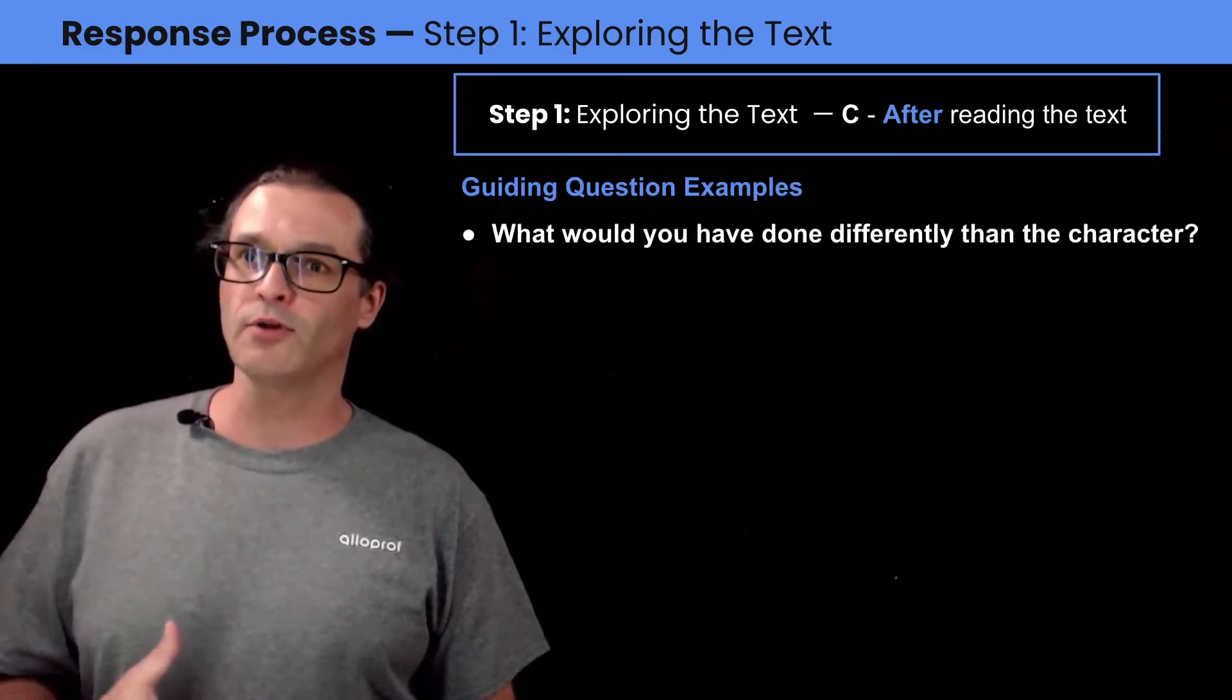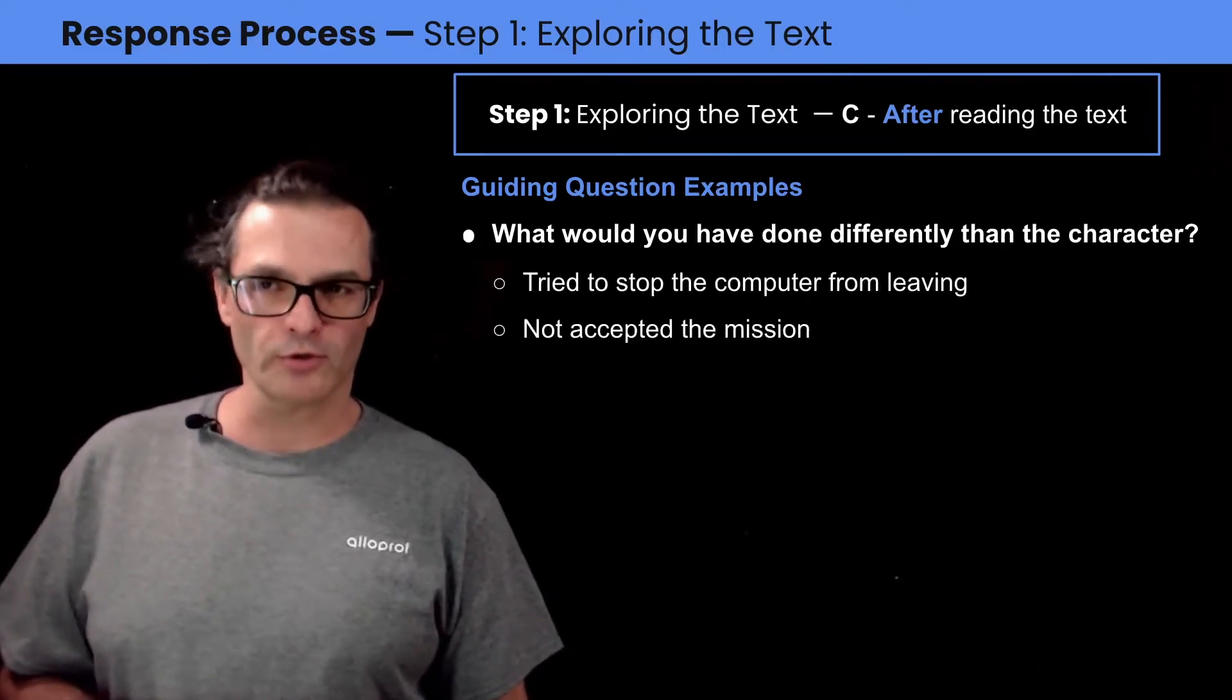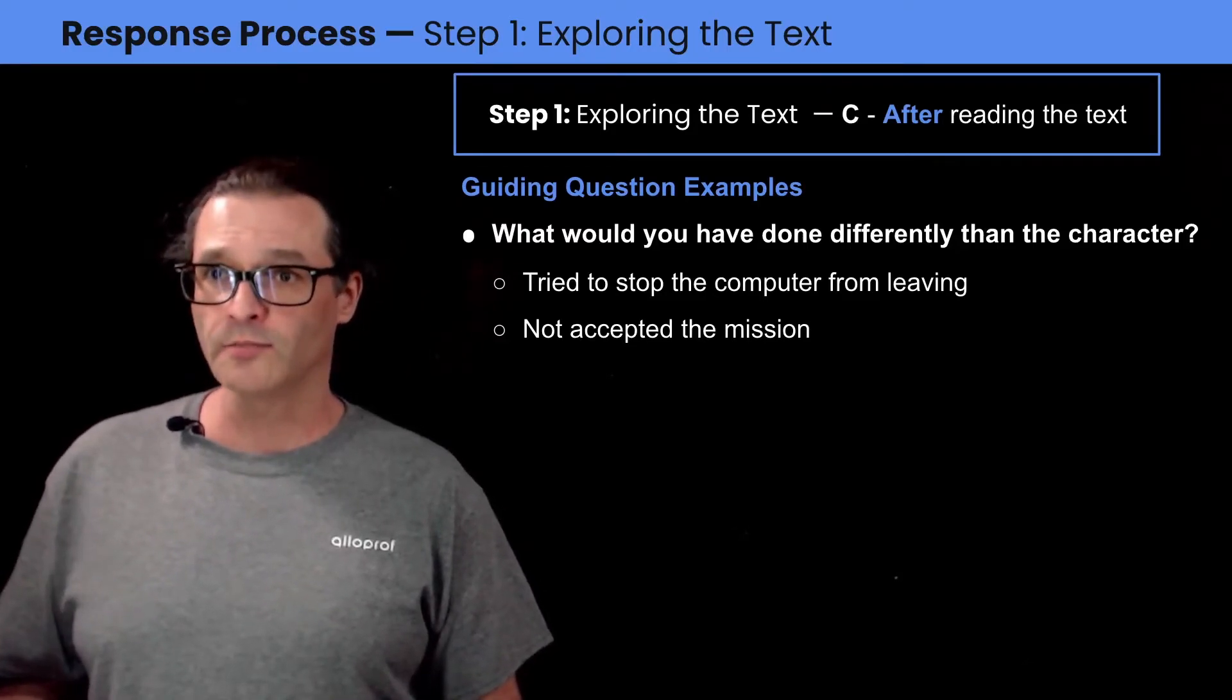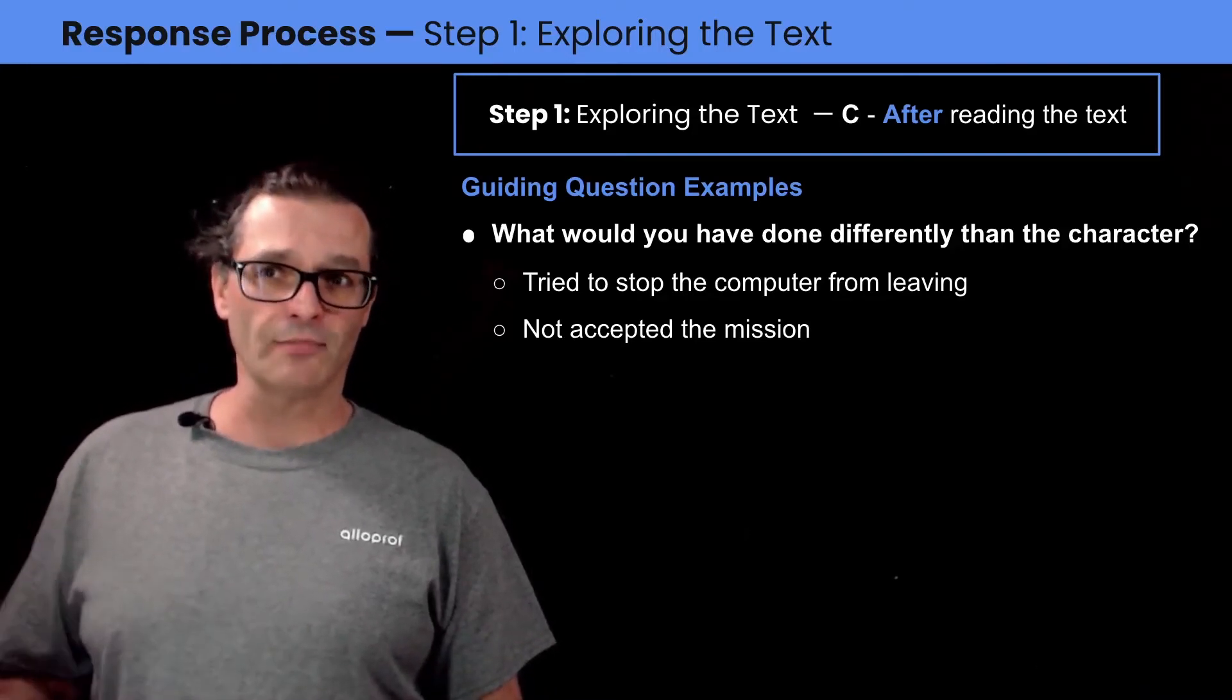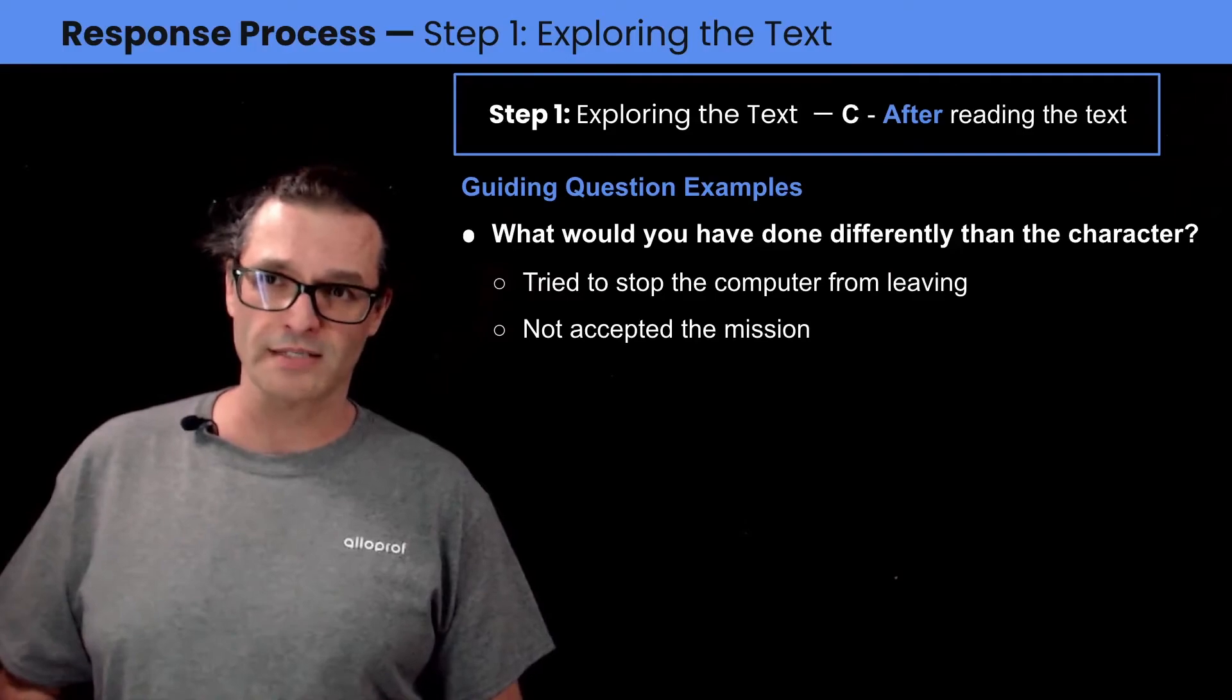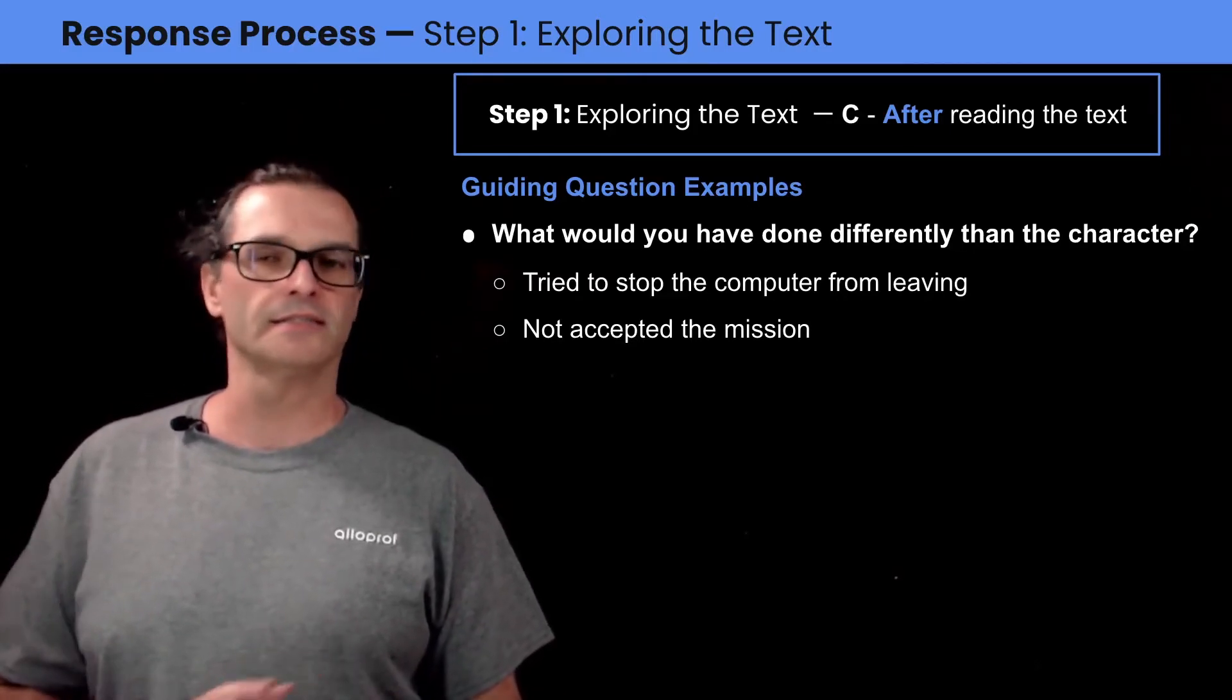The other example of guiding question is what would you have done differently than this character? Now, personally, the first thing I would have done differently is at the end, I would have tried really hard for the computer not to leave me all by myself on the moon base. Or at least I would have asked for maybe some help fixing the communication system. The other thing that I would have done very differently is in the first place, I would not have accepted that mission. Being all alone on a moon base all by myself is not something I could do.